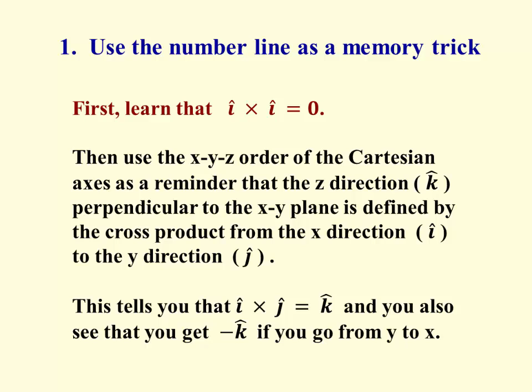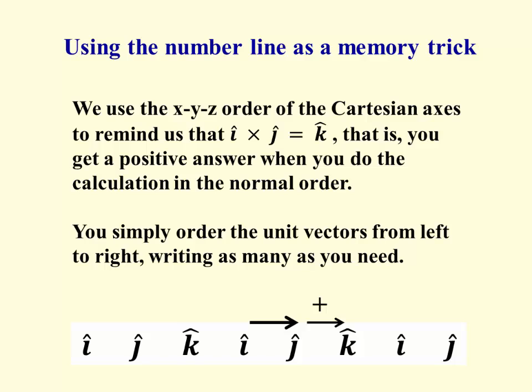What you do then is use that memory trick and write out the I, J, K unit vectors in order from left to right several times in a row. I, J, K, I, J, K, I, J, and so forth. If the cross product takes you to the right, as in I cross J giving you K, illustrated at the bottom of the page, then you always get a positive sign.